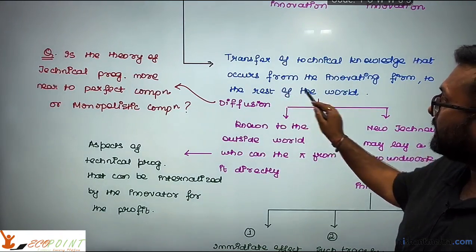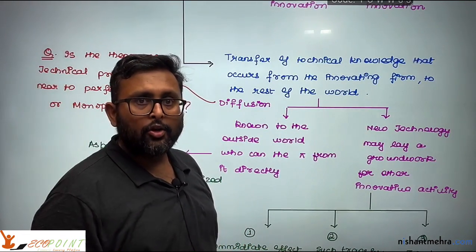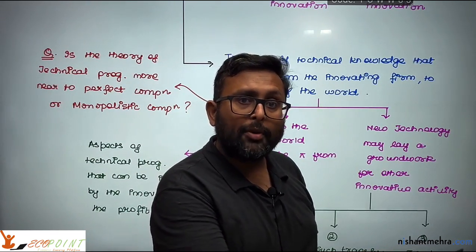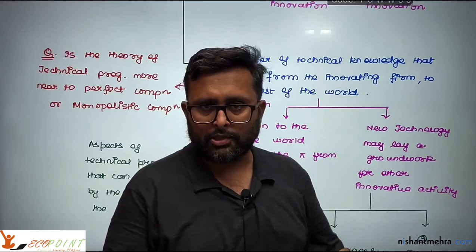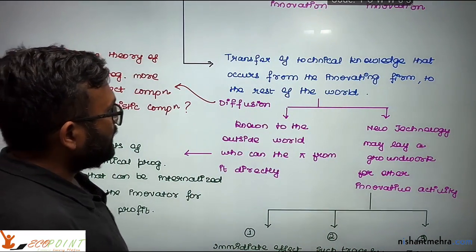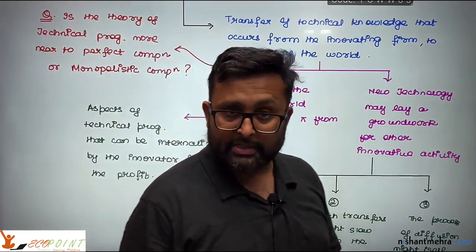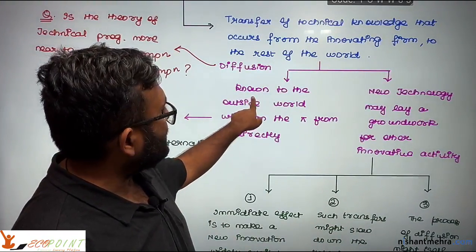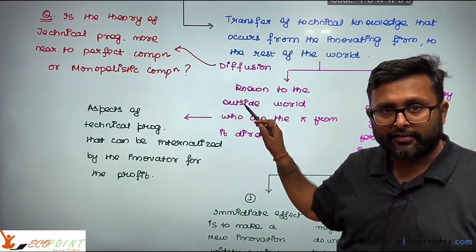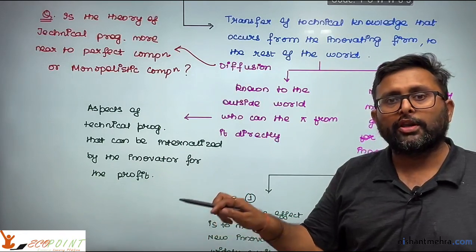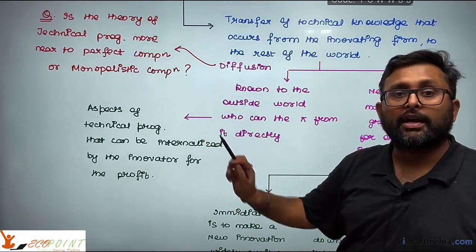There is a transfer of technical knowledge that occurs from the innovating firm to the rest of the world. You cannot keep knowledge — other firms benefit from my R&D and improve their own processes and products. My firm did research and development; other firms used that knowledge to improve their processes and products, and that increased the rest of the world's productivity and profit.